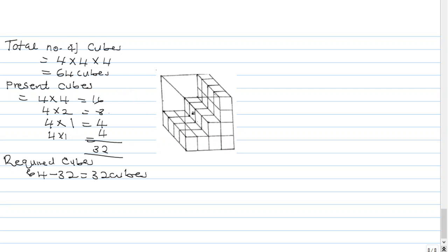The second layer we have 4 by 2 to get 8. The third layer we have 4 cubes by 1 to get 4 cubes. And in the fourth layer we have 4 cubes by 1 to get 4. We add them all to get 32. These are the cubes that are already in the structure.